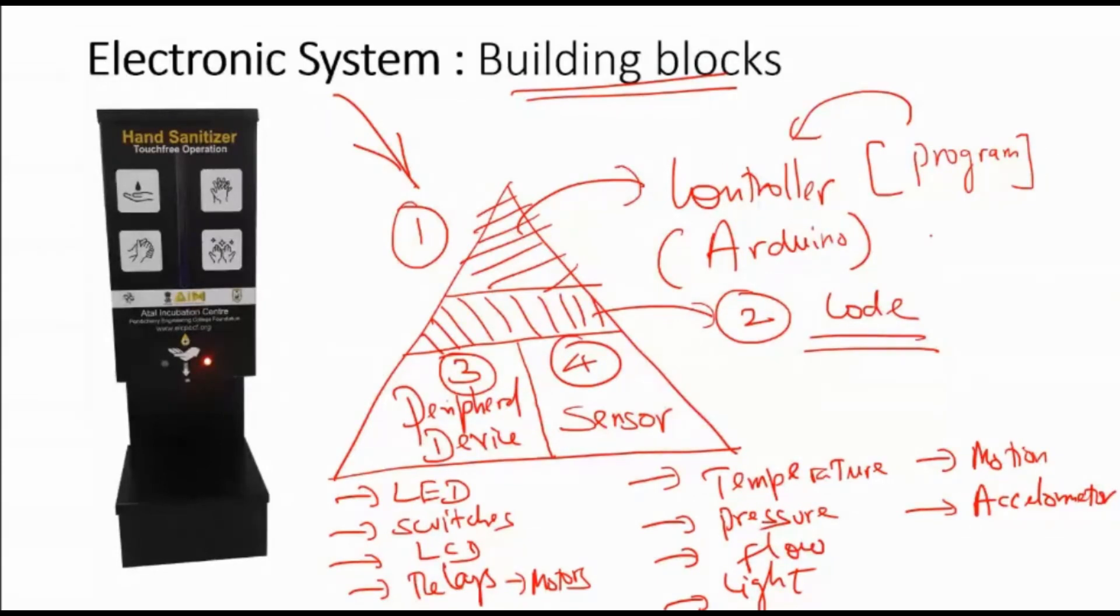If I say that controller, invariably it has a code for controlling it. Code is nothing but the instruction that I give for my controller to do an activity associated with peripheral devices, clubbed with sensors, and putting it all together forms my one electronic system.